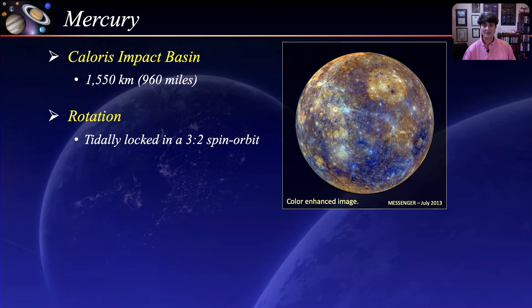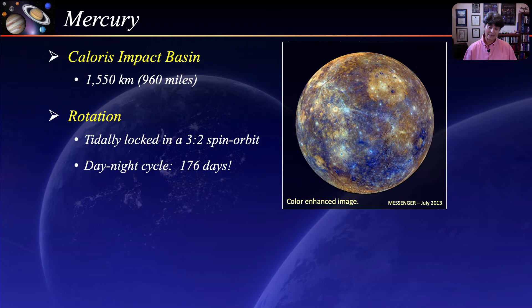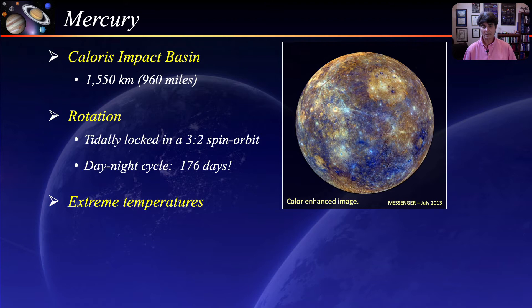This translates to a day-night cycle of 176 Earth days — daytime lasts 88 Earth days and nighttime lasts 88 Earth days. Because of this and the lack of an atmosphere to equalize the temperatures, there is a huge temperature range: 840 degrees Fahrenheit by day and minus 290 degrees Fahrenheit by night.